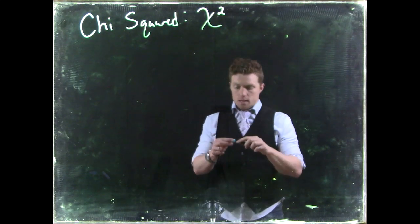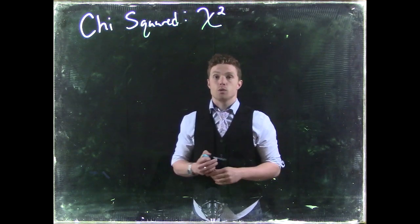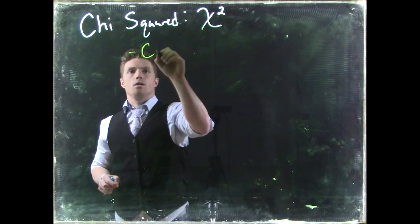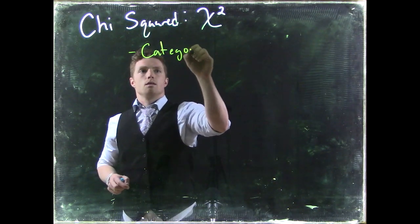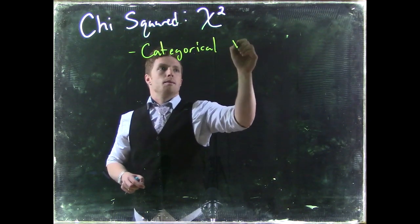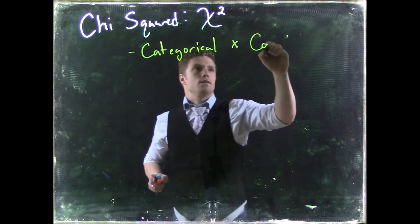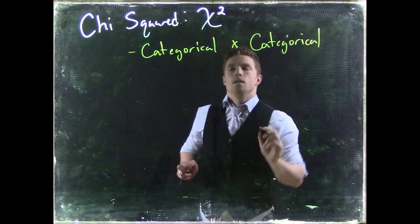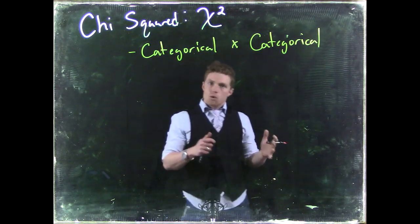So when we are thinking about doing our chi-squared test, this is when we are doing categorical by categorical analysis. This is like our categorical by categorical.